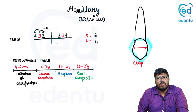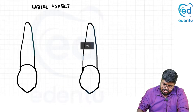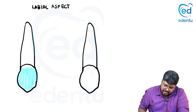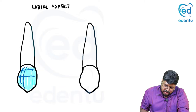Moving to each aspect of the crown and root — starting with the labial aspect. The labial surface is convex in all directions, and the convexity is much more pronounced mesiodistally. Therefore it appears much more bulky on the sides.